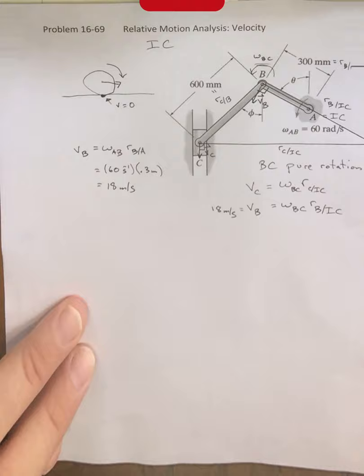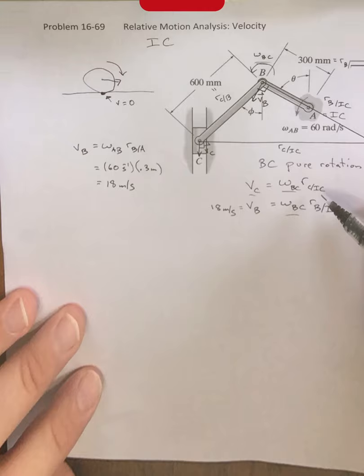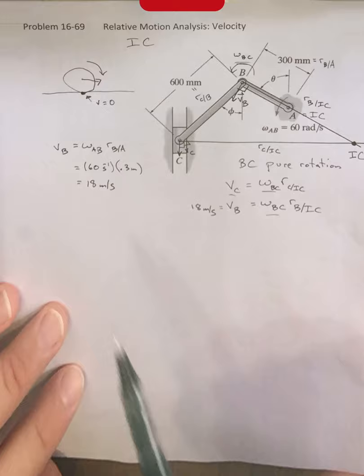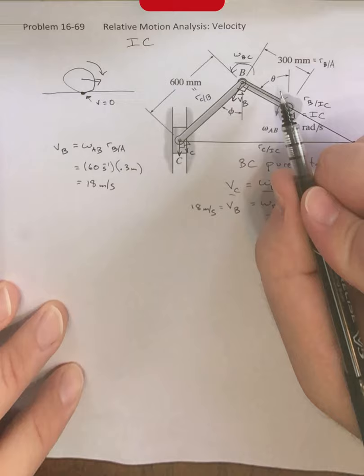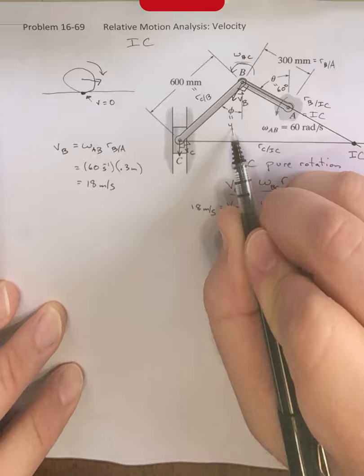We're trying to find omega BC, and we're trying to find VC. The only thing we need now are these two distances. As a result, we're going to look at this triangle. We're given these angles as a part of that problem. Phi was equal to 45 degrees. This angle theta was 60 degrees. If we look at this triangle, this angle is going to be 45 degrees, this angle is going to be 30 degrees.